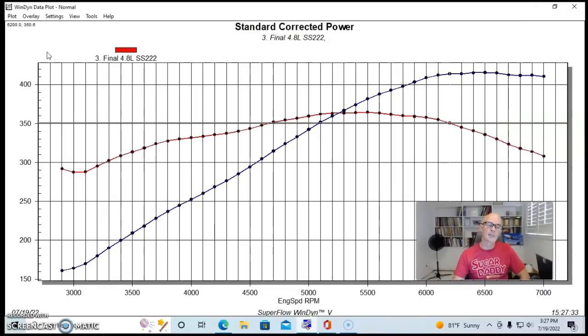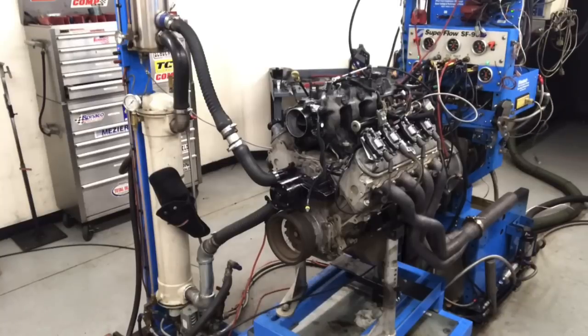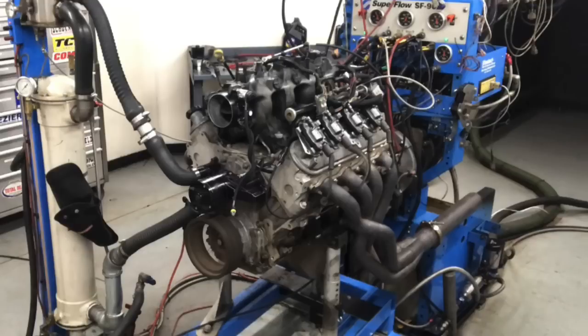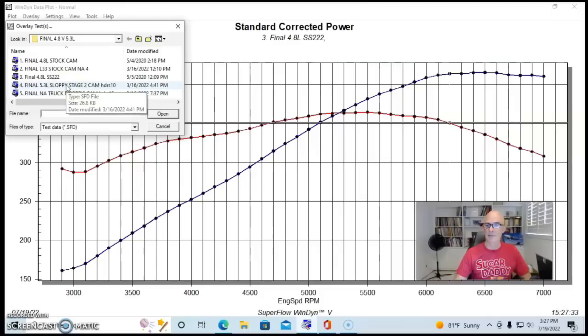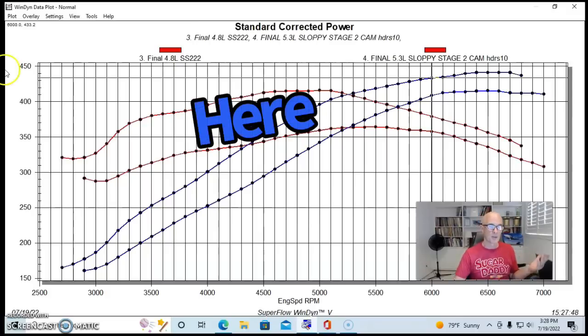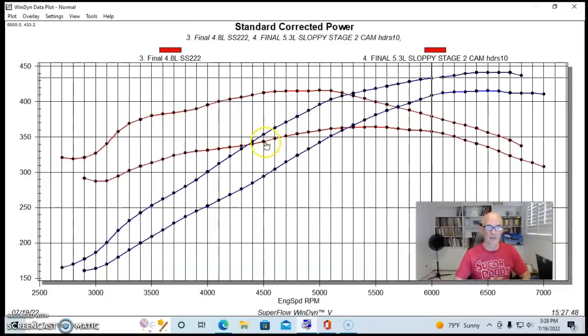Now let's see how well our 5.3 liter did, the L33 all-aluminum version. This is the 5.3 liter with the same Sloppy Stage 2 cam. Just like it did with the stock cam, the 5.3 liter is quite a bit better than the 4.8 because it's bigger, and it's better basically everywhere.